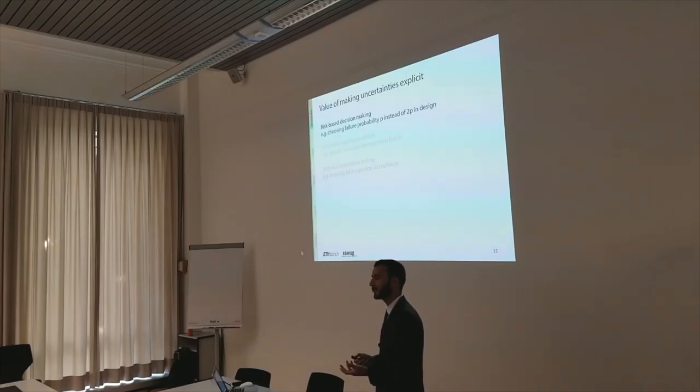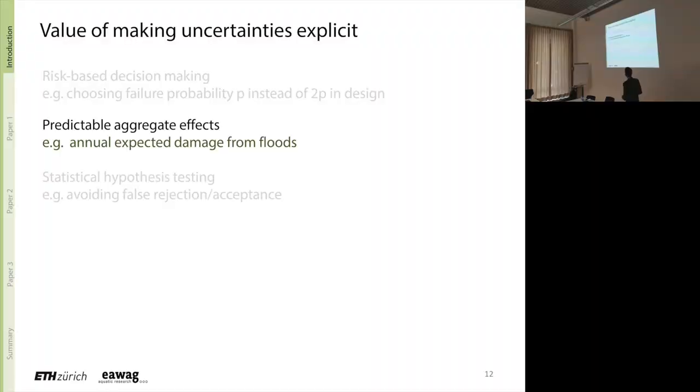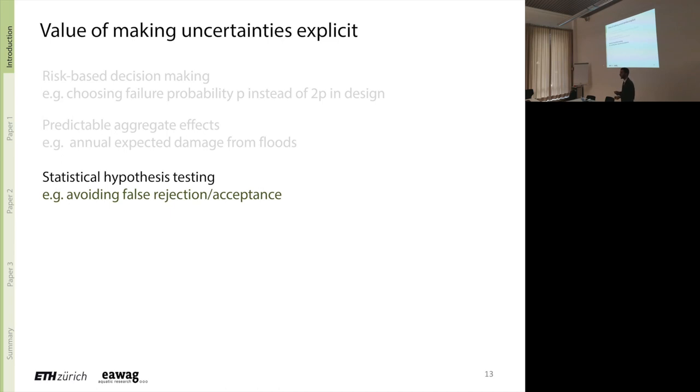Why do we do this? One can do risk-based decision-making based on these evaluation of probabilities. So if you are trying to do design based on these models, the safety factors that we use are hard to justify in terms of economy and efficiency. So instead you can talk in the language of failure probabilities. Depending on how much risk averse you are, you can choose p or 2p as a probability of design. Predictable aggregate effects for hydrologic phenomena which have frequentist tendencies like floods over the years in a city. And in terms of its pure scientific applicability, if you have two models or hypotheses explaining the same data to a varying degree, you don't falsely accept or reject. You assign probabilities to these hypotheses till more differentiating data comes in.